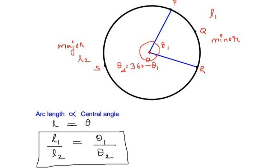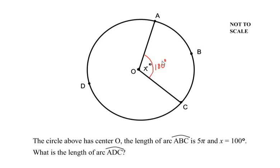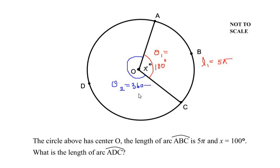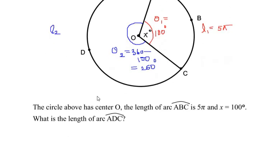Now let us apply this relationship to solve the example. We consider 100 degrees as theta 1, the central angle for the minor arc ABC, and the length of arc ABC is l1, given as 5π. The remaining angle becomes theta 2, which is 360 degrees minus 100 degrees, giving us 260 degrees. We need to find the length of the major arc ADC, which we call l2. Using the relationship l1 over l2 equals theta 1 over theta 2, let us substitute the values.